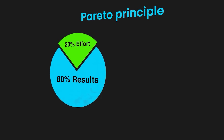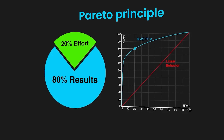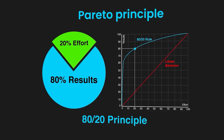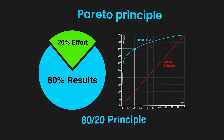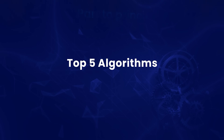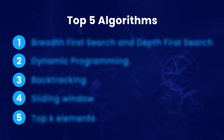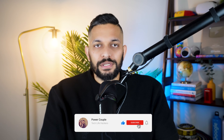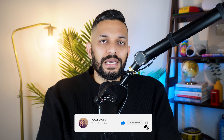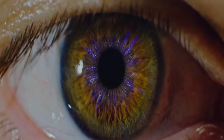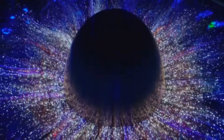In most interviews, they are asking you very similar kinds of questions. And if you've heard of the 80/20 rule or Pareto's principle, you know that 20% of algorithms will be asked in 80% of the interviews. In this video, I'll tell you the top 5 algorithms I was asked in my coding interviews so that you can pick your top 20% algorithms yourself. I'll also share the exact problems where these algorithms can be applied.